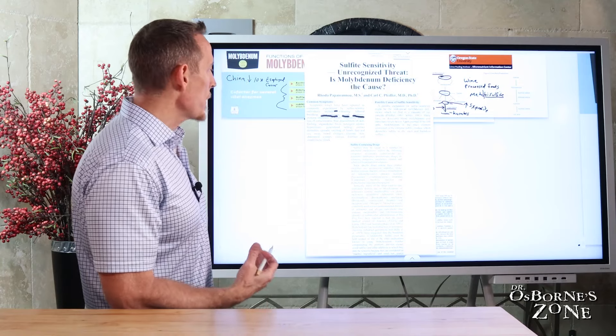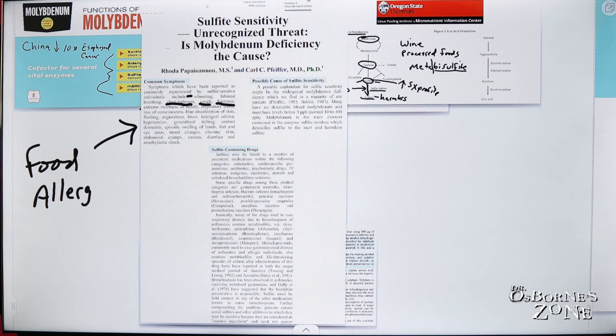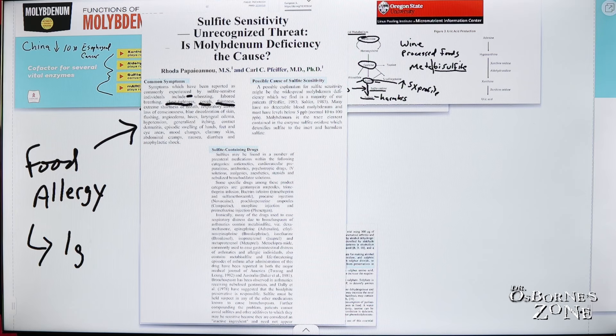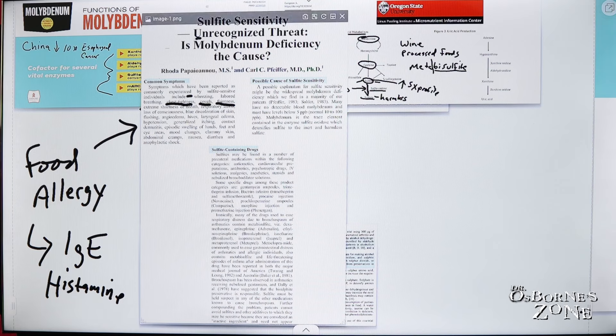Some people would look at these symptoms and they would say, wow, these really look like what? It looks like food allergy, possible food allergy. Well, food allergy is classically defined as an immune response where you have IgE production and histamine release. And histamine intolerance looks a lot like sulfite intolerance, symptomatically speaking. But this, in this case, this is possibly not a food allergy, but possibly a molybdenum deficiency that's causing it.